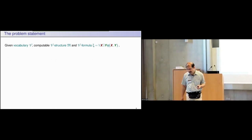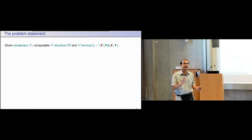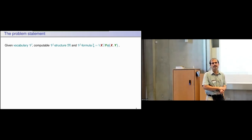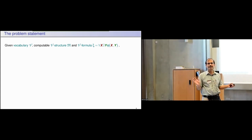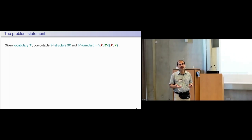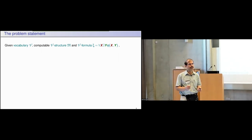Here is the formal problem statement: given a vocabulary V and a computable V-structure — a structure with an enumerable universe and computable interpretations of functions and predicates — I give you halting Turing machines for interpreting each function and predicate. Given a vocabulary, a computable structure, and a formula with variables separated into universal and existential ones, the first question is: is there a Turing machine that serves as a Skolem function for the existentially quantified variables in this formula evaluated over the structure M?